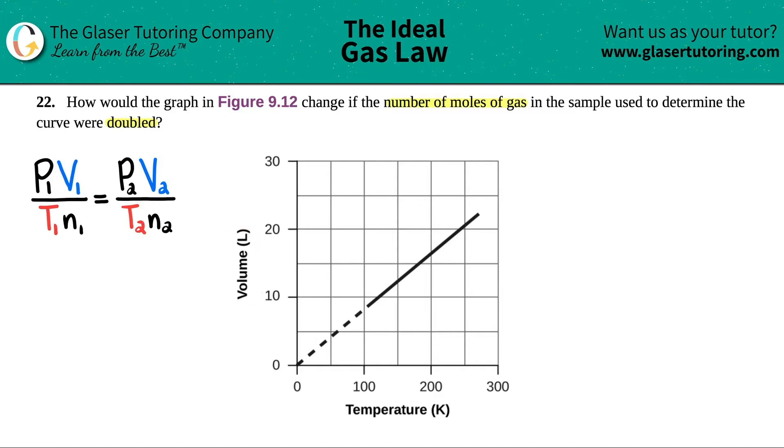This is a graph of volume and temp. So I'm just going to say maybe that we have volume and we have temp. And they want us to know what's going to happen if the number of moles were doubled. So we have to keep that in as well. So n represents the number of moles.